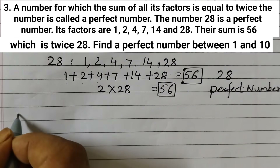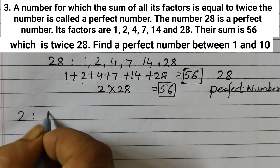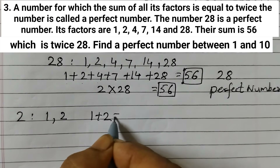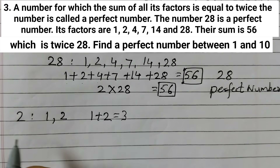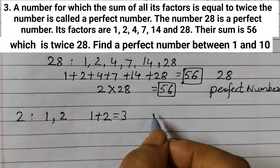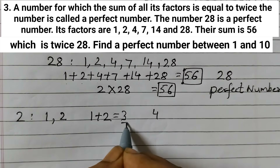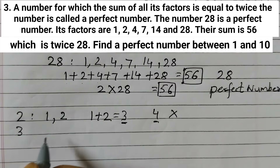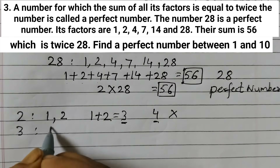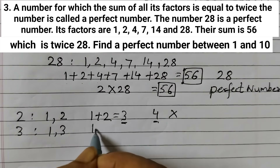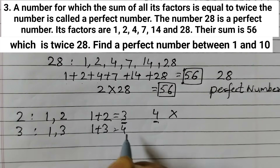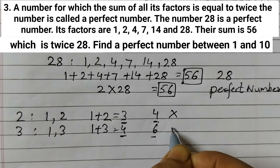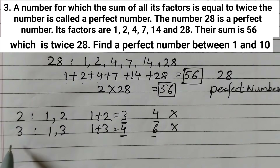Factors of 2: 1 and 2. Sum = 1+2=3, and twice the number = 2×2=4. Since 3≠4, not a perfect number. Factors of 3: 1 and 3. Sum = 1+3=4, and 2×3=6. Since 4≠6, not a perfect number.